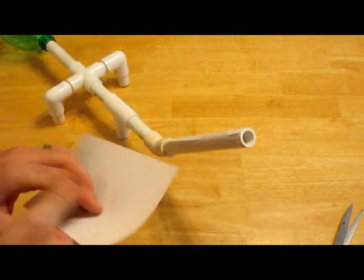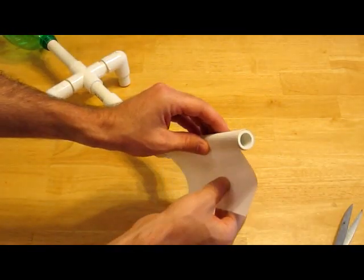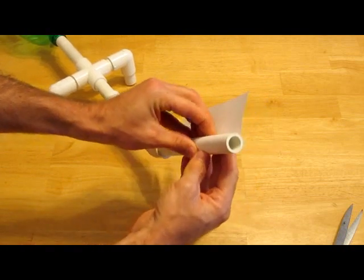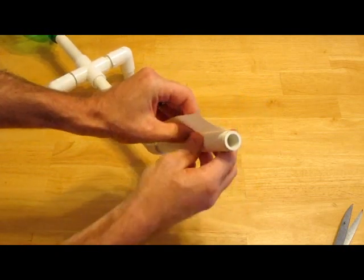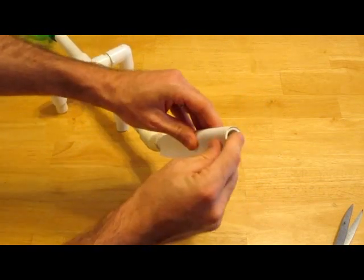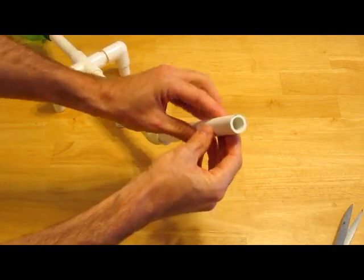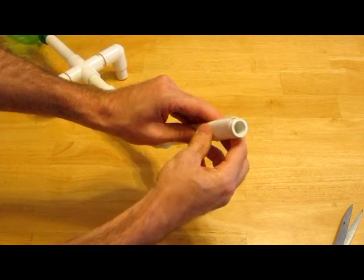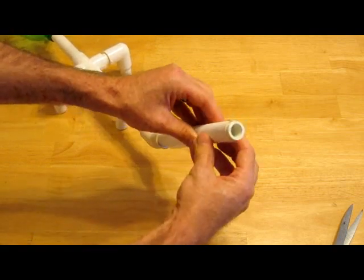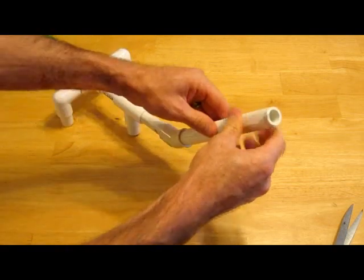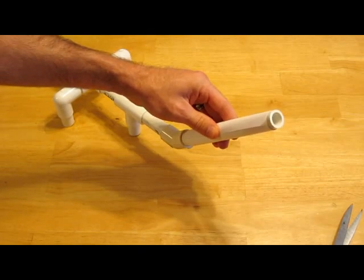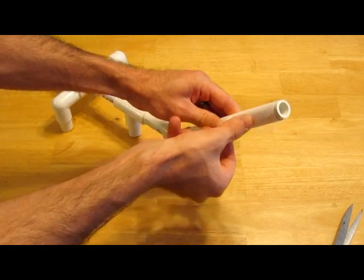Then you take your second sheet of paper and do the same thing on top of the first. Make sure you get it as tight as possible. Try and keep it as flush as you can, also, around the edges of the paper, that is.